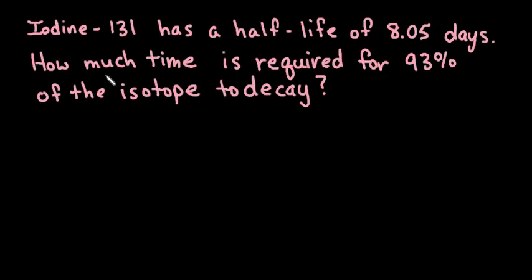Hi, for this video I want to show you how to solve a half-life problem when you're trying to find the amount of time to reach a certain decay. So iodine-131 has a half-life of 8.05 days. How much time is required for 93% of the isotope to decay?